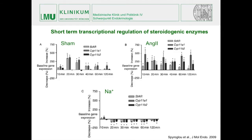Looking at steroidogenic enzyme expression — StAR, CYP11A1 (side-chain cleavage), and CYP11B2 (aldosterone synthase) — the key difference between sham and angiotensin II was not in StAR or CYP11A1, but CYP11B2 was specifically upregulated at very early time points after angiotensin II stimulation. Sodium chloride was actually able to decrease baseline expression of all those steroidogenic enzymes — quite remarkable changes occurring at very early time points.